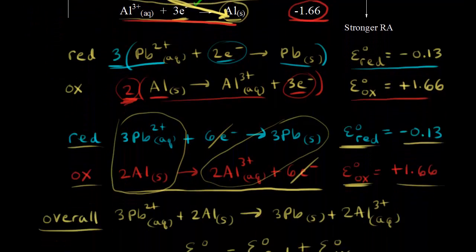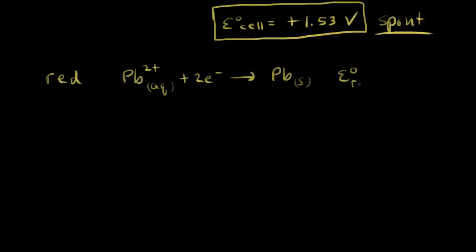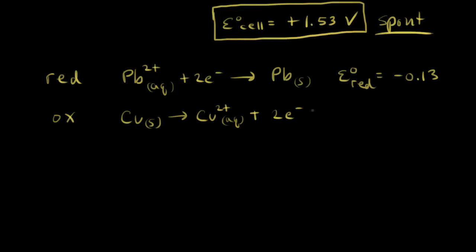Writing the half-reactions: the reduction half-reaction is Pb²⁺ + 2e⁻ → Pb(s), with a standard reduction potential of −0.13 V. The oxidation half-reaction is Cu(s) → Cu²⁺ + 2e⁻, and the standard oxidation potential is −0.34 V, since we're writing this as an oxidation half-reaction.